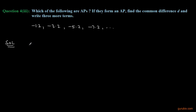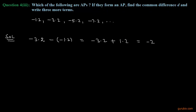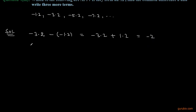We shall subtract the first term from the second term. The second term is minus 3.2, and we subtract minus 1.2 from it, so we get minus 3.2 plus 1.2, which gives us minus 2. Now we shall subtract the second term from the third term. The third term is minus 5.2 minus minus 3.2, so we get minus 5.2 plus 3.2, which also gives us minus 2.